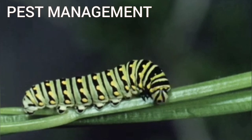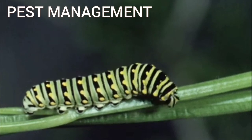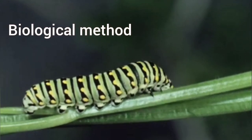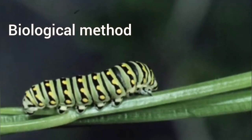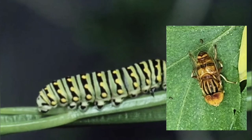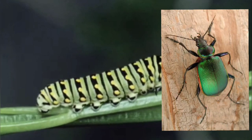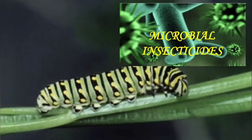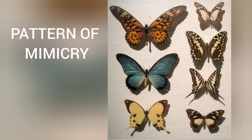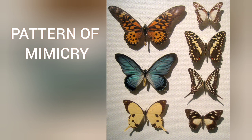This pest can be controlled by biological methods using its natural enemies — parasitoids, predators, and pathogens. The pattern of mimicry varies with different species of swallowtail butterflies.